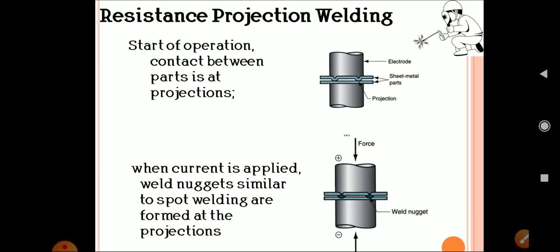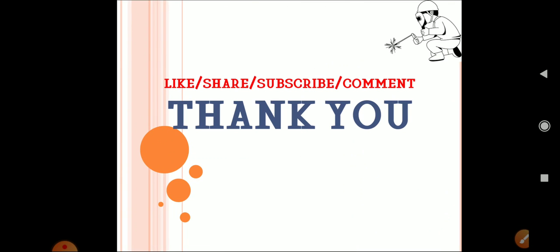In figure two, when current is applied, welding nuggets similar to spot welding are formed at the projection. First we place the projected sheet metals and the plane sheet metal, then when we apply pressure or force on both sides - positive and negative electrode - we pass the current, which creates the welding nugget. Thank you.